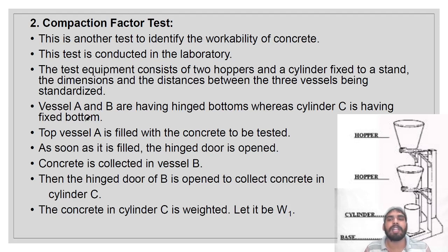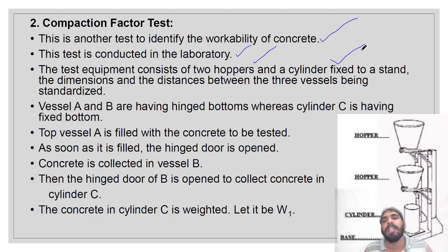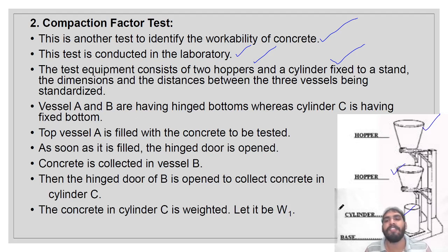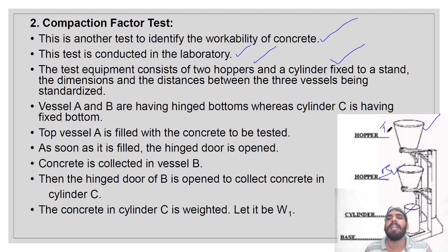Next is the compaction factor test, another test to identify the workability of concrete, conducted in the laboratory. The test equipment consists of two hoppers (A and B) and a cylinder (C) fixed to a stand, with standardized dimensions and distances. Vessels A and B have hinged bottoms while C has a fixed bottom. First, fill concrete into hopper A, release the hinge so concrete falls into B, then release B so concrete falls into cylinder C.